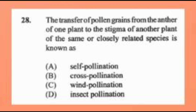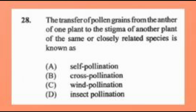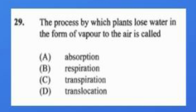Question number twenty-eight: the transfer of pollen grains from the anther of one plant to the stigma of another plant of the same or closely related species is known as A) self-pollination, B) cross-pollination, C) wind pollination, D) insect pollination. The answer is B, cross-pollination. Once there are two plants involved, that's cross-pollination.